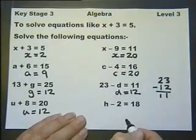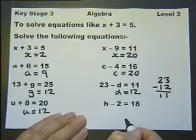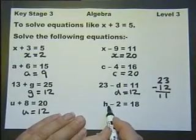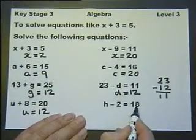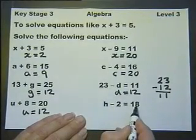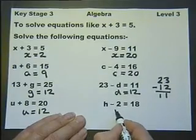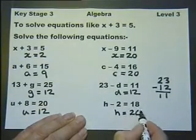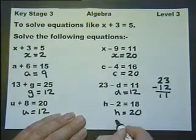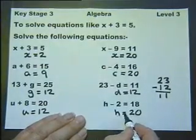Now that one's not quite so easy around that way. So let's go back round this way, where it's easier. Something take away 2 is 18. So if I add the 2 onto the 18, I'll get 20. Always check your answer to see that it in fact does work.